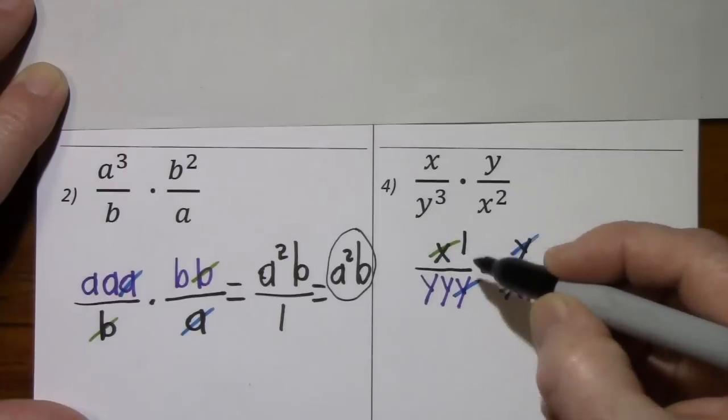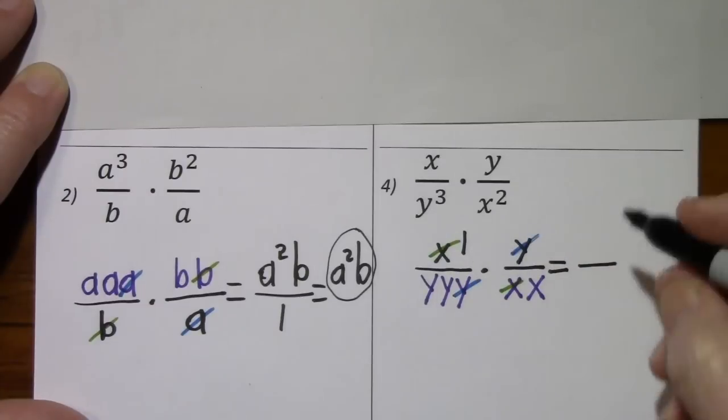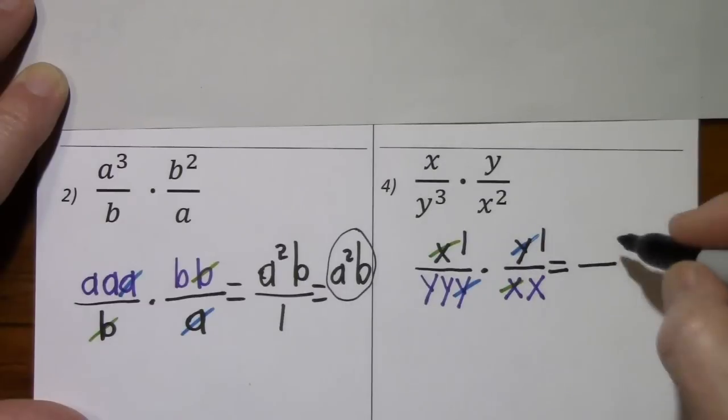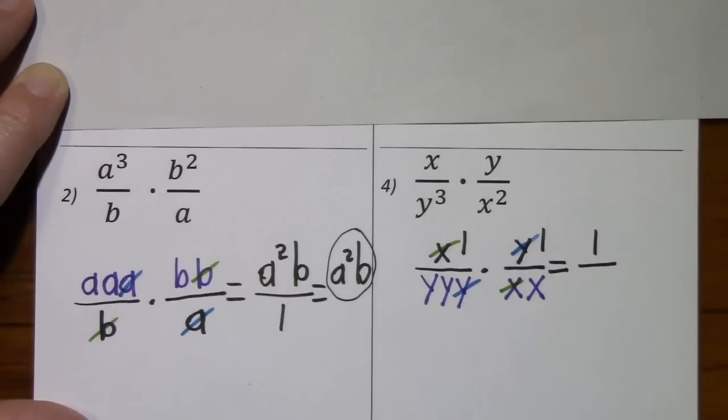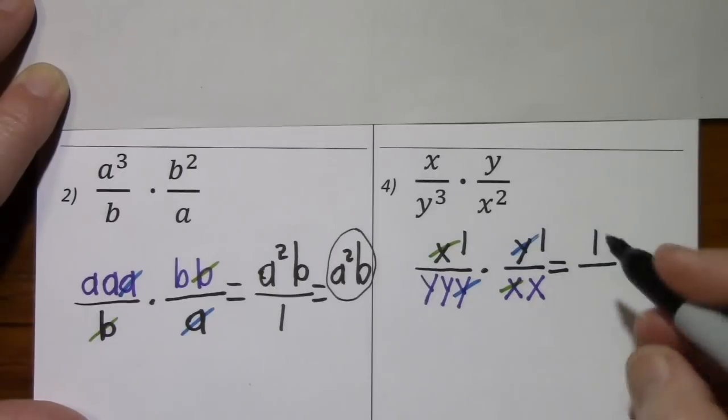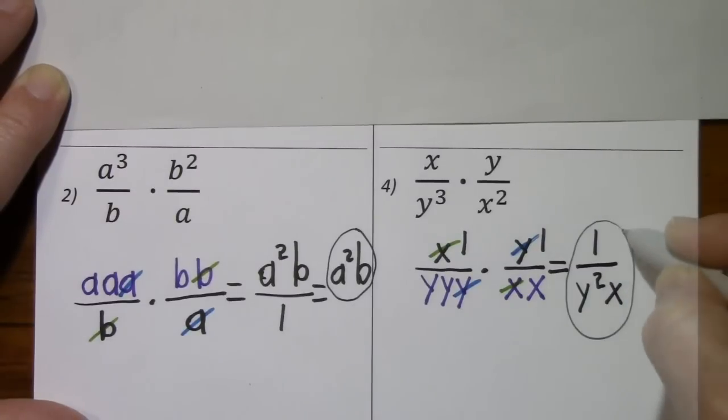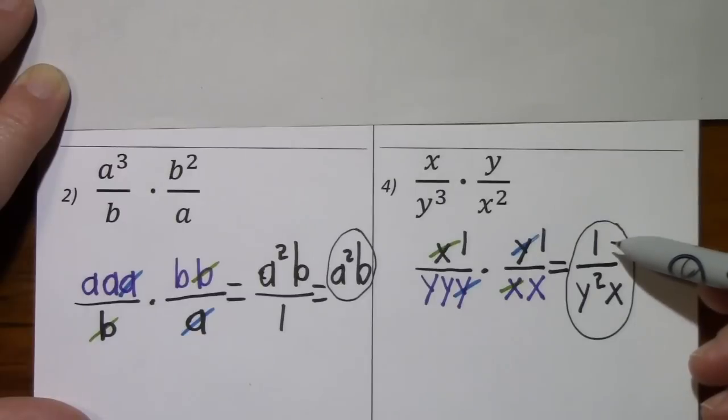So when x cancels x, it really goes into itself one time. So you have the same thing happen with the y. That's a 1. So 1 times 1 gives us 1 in the numerator. The denominator, we have y squared and x. So notice when 1 is in the denominator, it's not correct to leave it there. But when it's in the numerator, you have to have it.